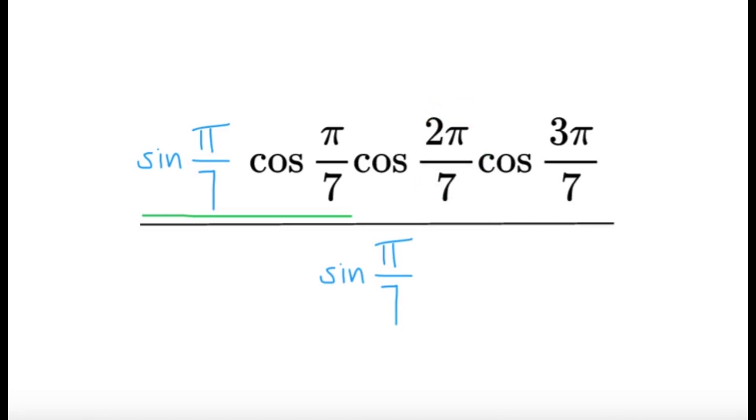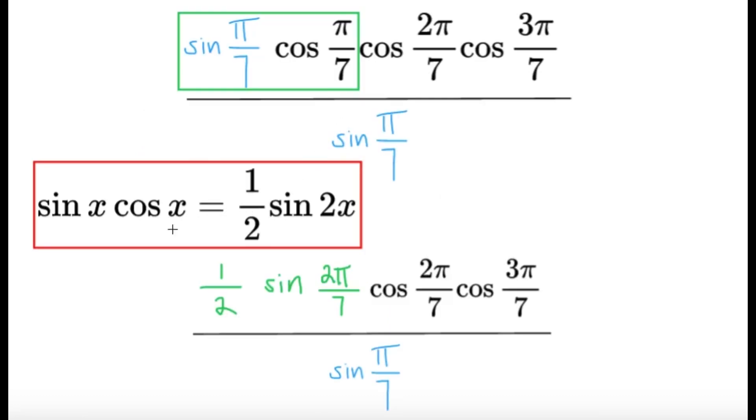All right. So since we have the observation here that this looks like a double angle identity, we're going to use that here. So from the double angle identity, if we divide both sides by two, we're going to get that sine x cosine x equals one half sine two x. So the green part over here, it's going to be equal to one half of sine two pi over seven. And then the rest, I just copied again.